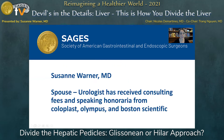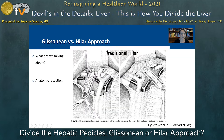For the sake of time, I'll leave aside the argument of whether or not we should be doing anatomic versus non-anatomic resections in the interest of sparing parenchyma. I will disclose that my spouse is a urologist who has received consulting fees and speaking honoraria from Coloplast, Olympus, and Boston Scientific.